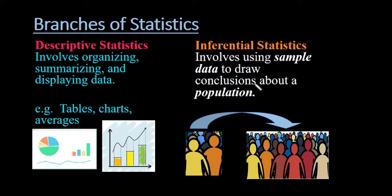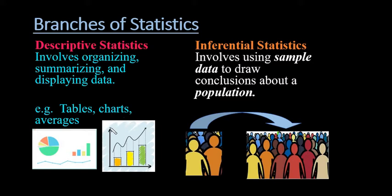The inferential branch involves using your sample data to draw conclusions about a larger population. For example, you might have done a study asking people how they're going to vote in the next election. You might take a sample of a thousand people, and then apply those results to the larger population. If three hundred out of one thousand, or thirty percent, said they'd vote for candidate A, then you could say approximately thirty percent of the population will be voting for candidate A.